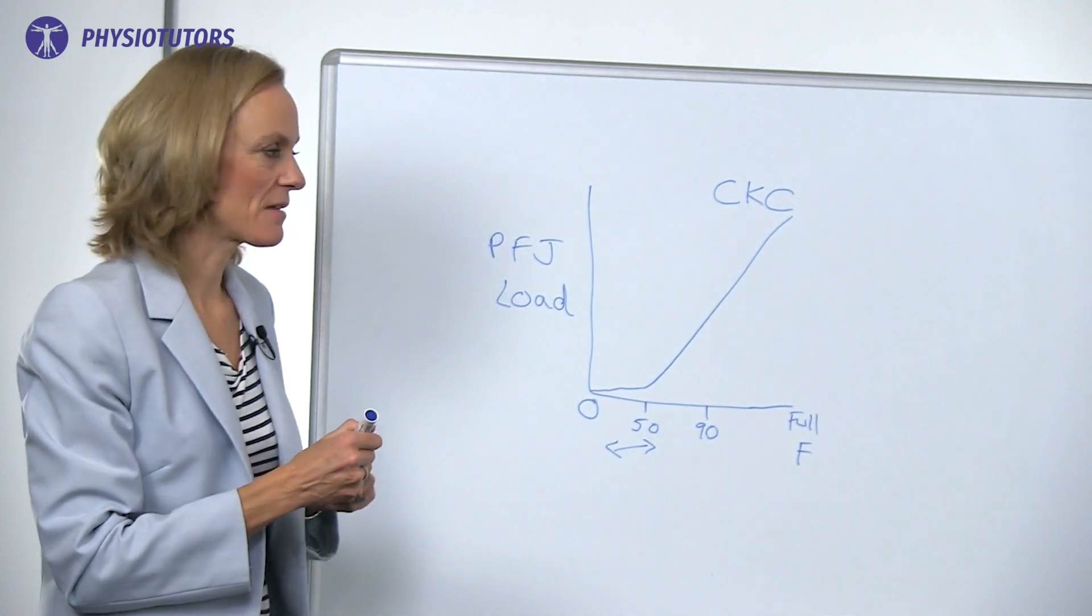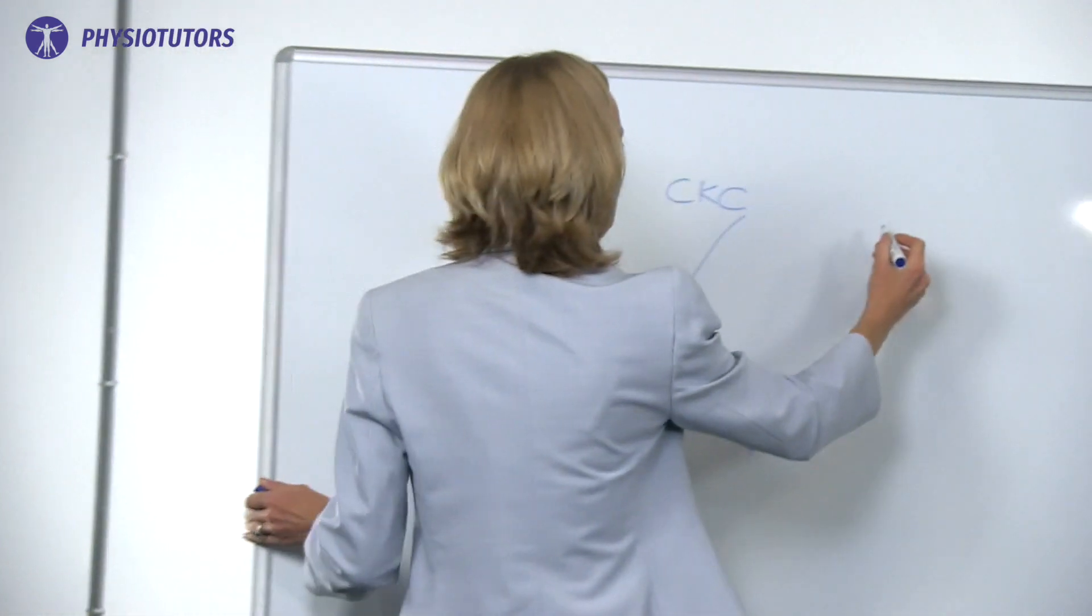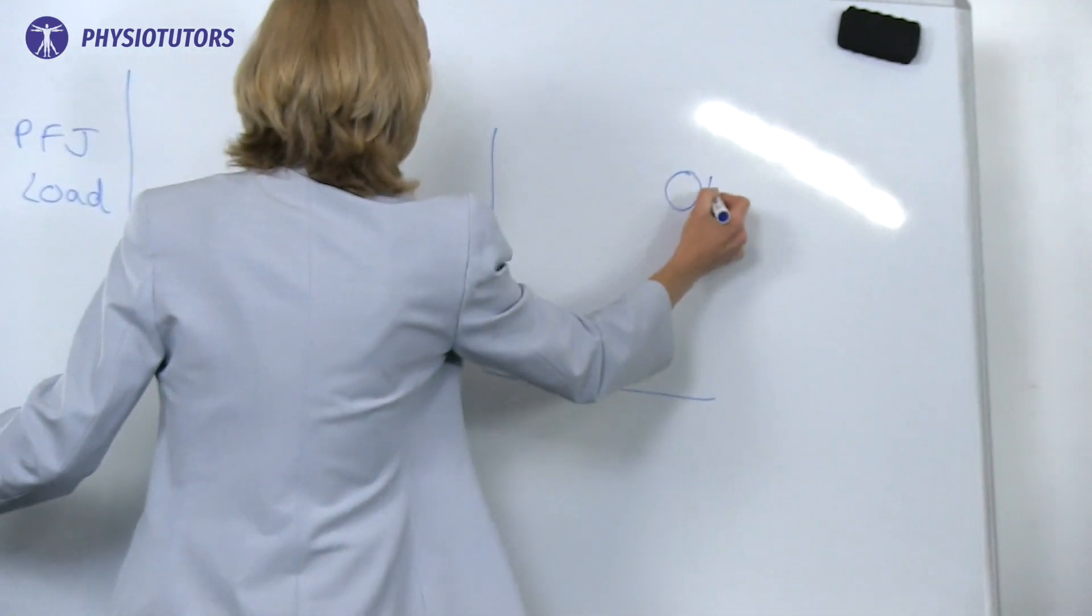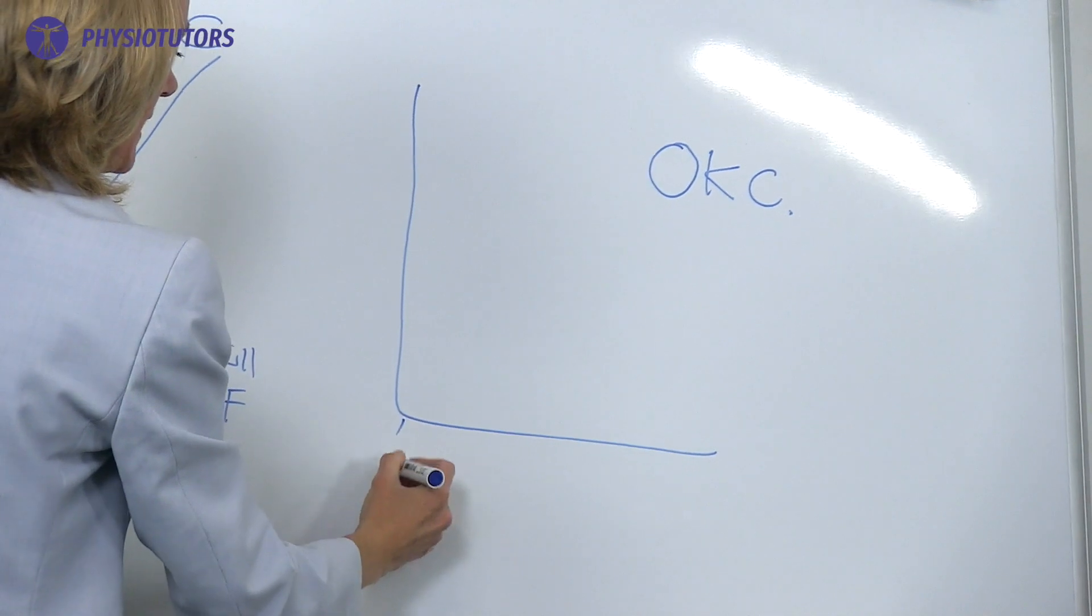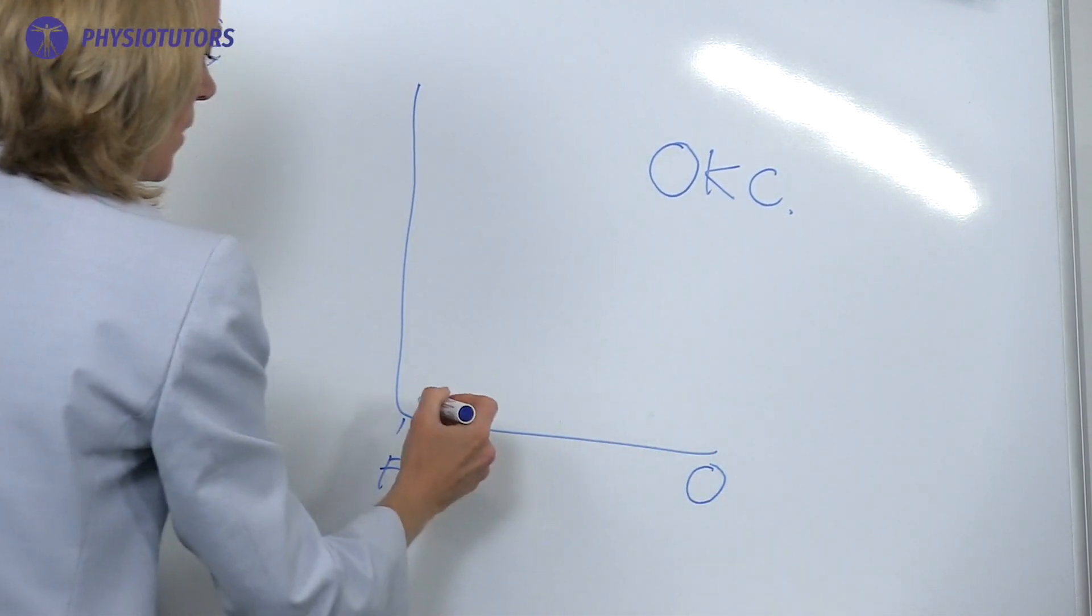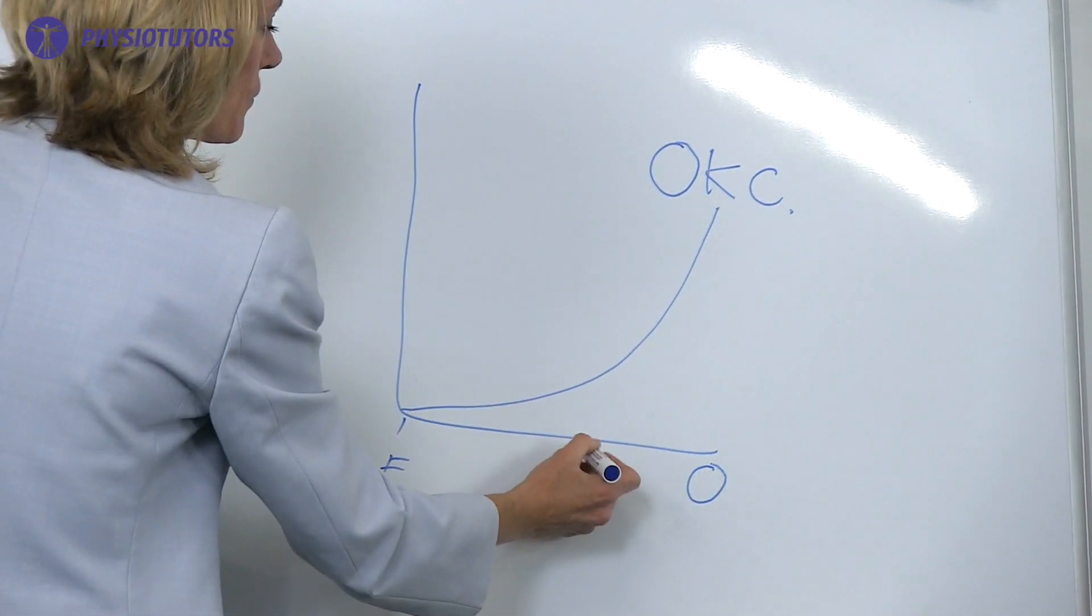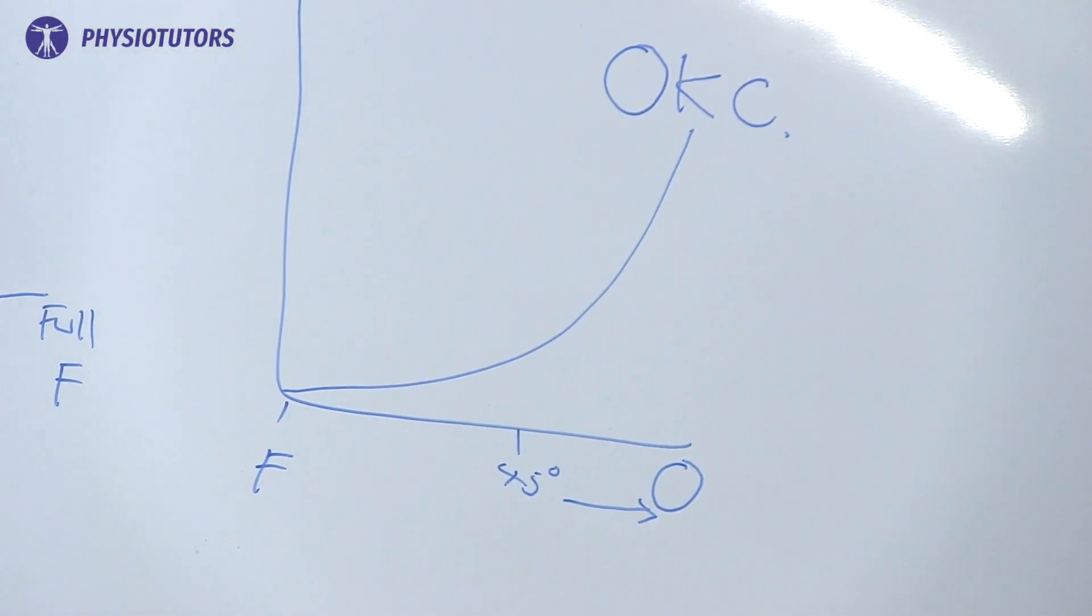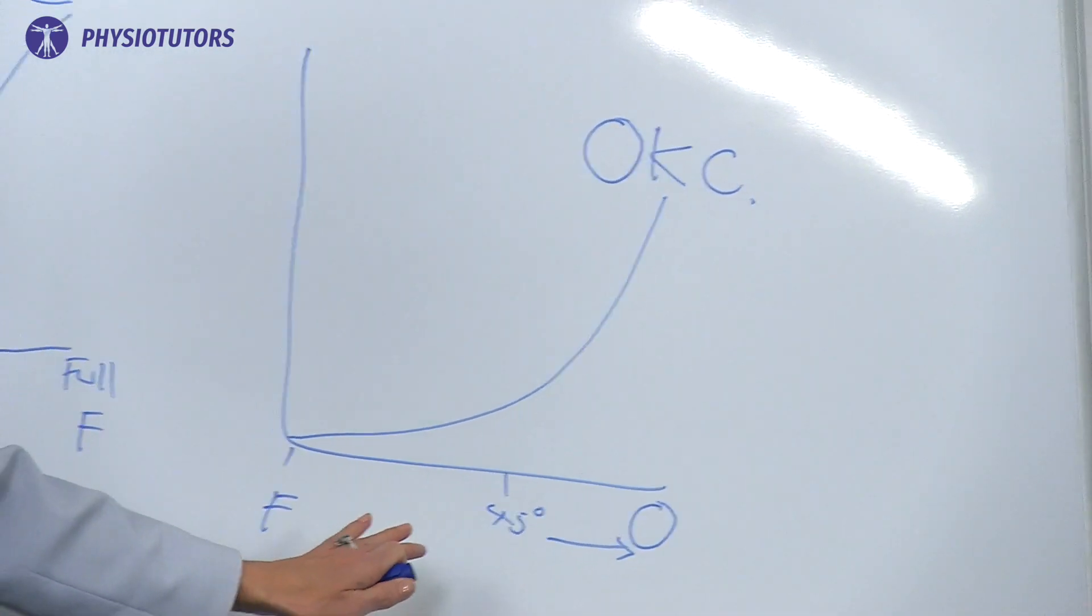Now just be aware that open chain is the other way round. So if we draw the graph again, now we're talking about open kinetic chain. If we've got flexion and full extension, what happens is it does that. So from 45 degrees through to zero is the difficult range there.